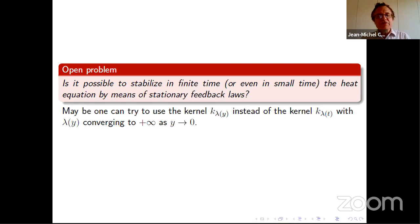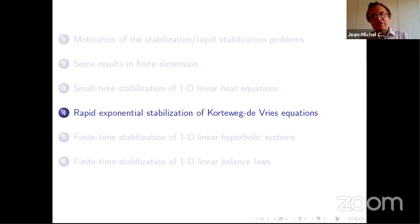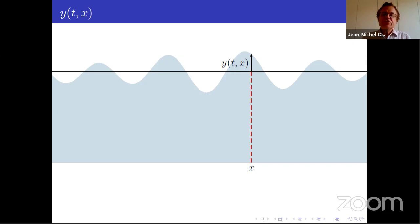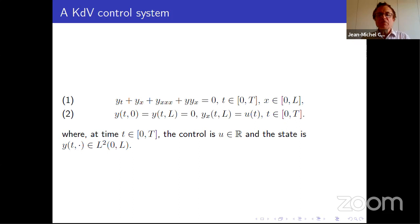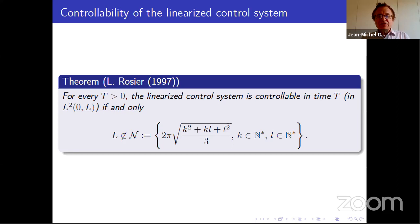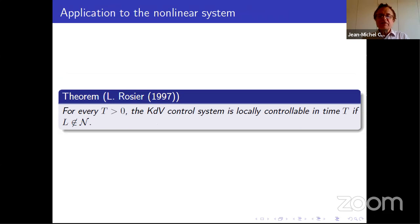Now I would like to say a few words about rapid stabilization of the Korteweg-de Vries equations. This models the height of water with respect to some equilibrium y, and the equation is given by the KdV equation. We consider different types of control. The first idea is to use the Neumann boundary condition y_x(t,L) as the control, with y(t,0) equals y(t,L) equals 0. A nice result due to Lionel Rosier says the linearized control system is controllable in time T if and only if L does not belong to a critical set N, and from that we get small time local controllability of the KdV system.